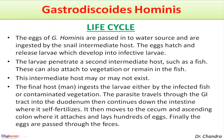Regarding the life cycle of the parasite: the eggs of Gastrodiscoides hominis are passed into a water source and are ingested by the snail, which is the intermediate host. The eggs hatch and release larvae, which develop into infective larvae.